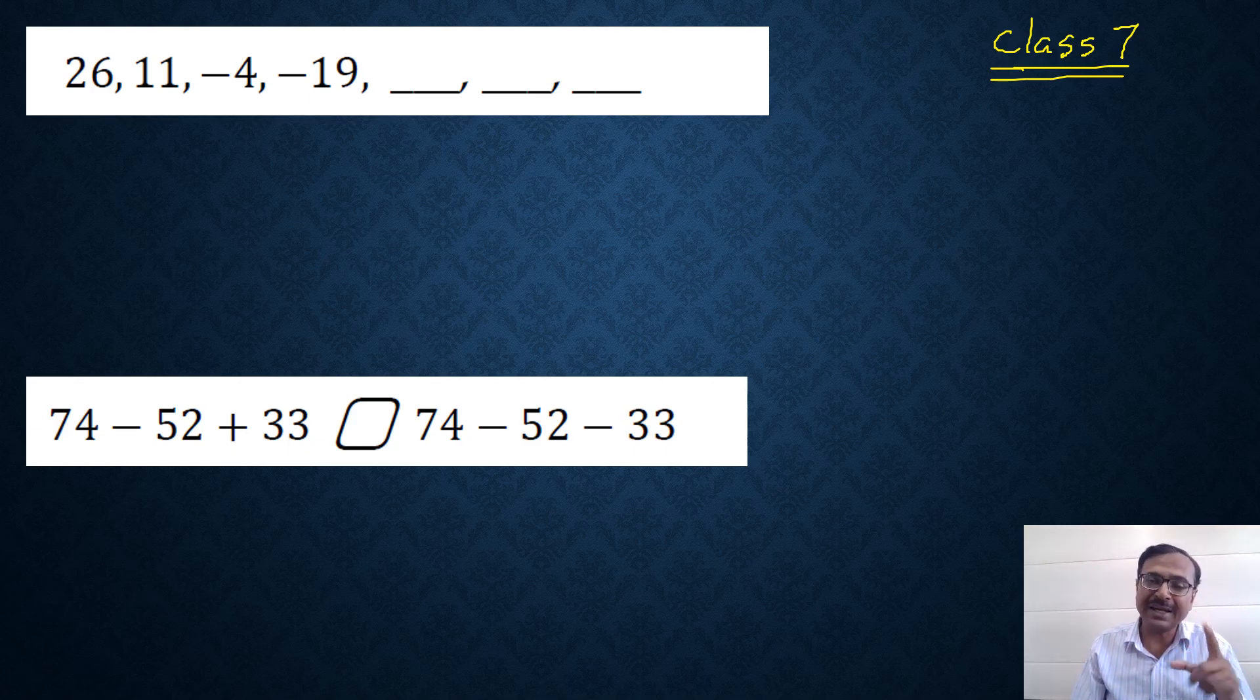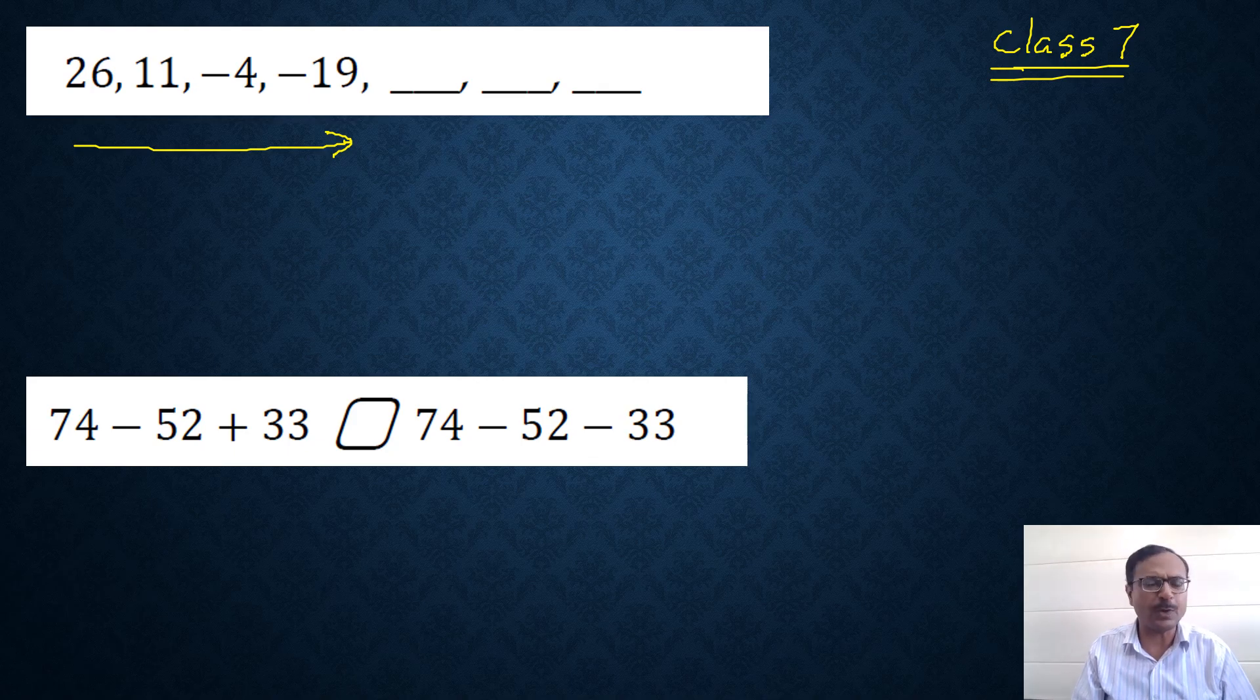If you are in class 7, the link of the practice worksheet is on the website. You can download the copy using that link or download the entire set of worksheets - 64 different worksheets for class 7. All links are in description box below. Let's see the question: 26, 11, minus 4, and minus 19, four integers given.